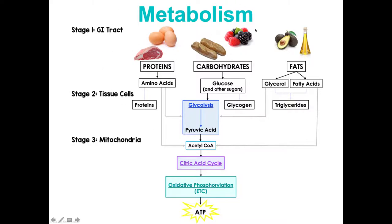In stage one, proteins, carbs, and fats in your GI tract are broken down into their smallest components. Those small components get transported into tissue cells, and if we're breaking them down for energy, that happens in the cytoplasm; then acetyl-CoA enters the Krebs cycle and the ETC to generate ATP. In a diagram of this process, light purple arrows show anabolic reactions while black and gray arrows show catabolic or breakdown reactions.